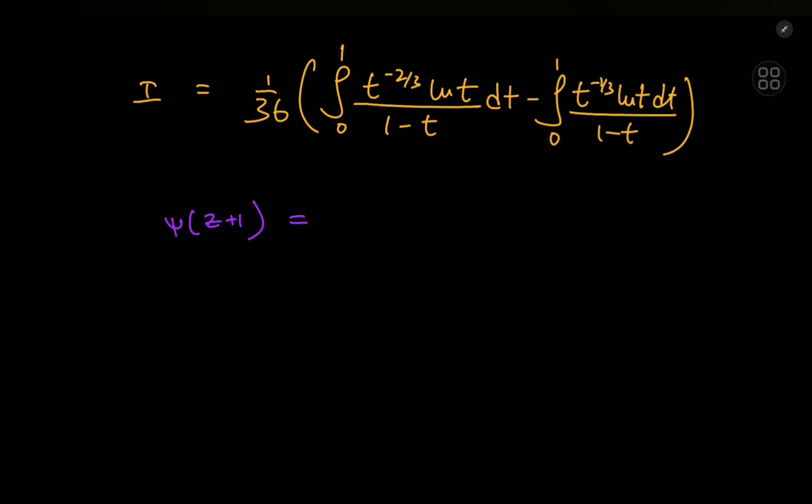Anyway, so digamma z plus 1 equals negative Euler-Mascheroni constant plus an integral from zero to 1 of 1 minus x to the z divided by 1 minus x dx.